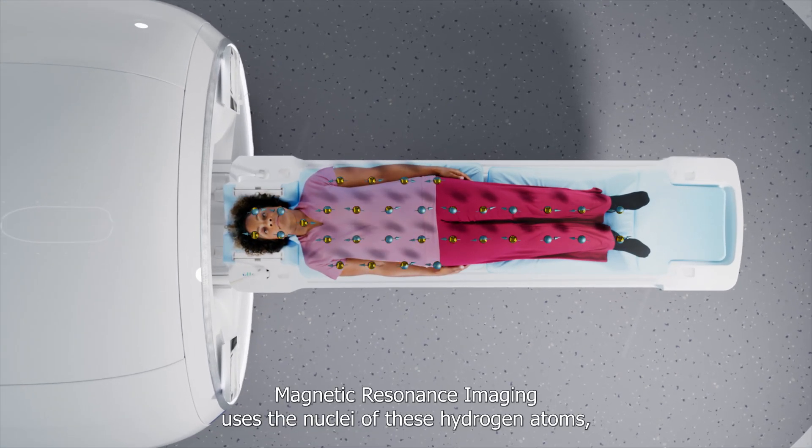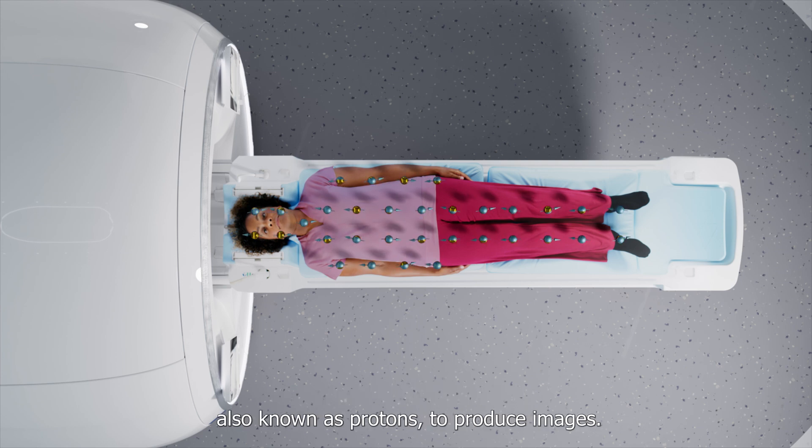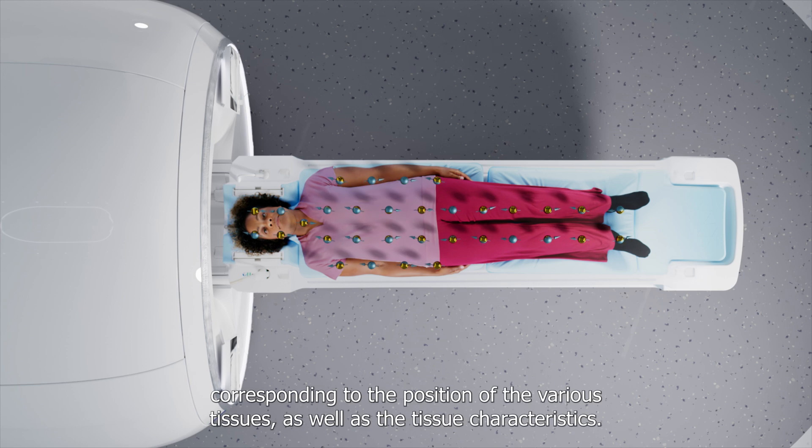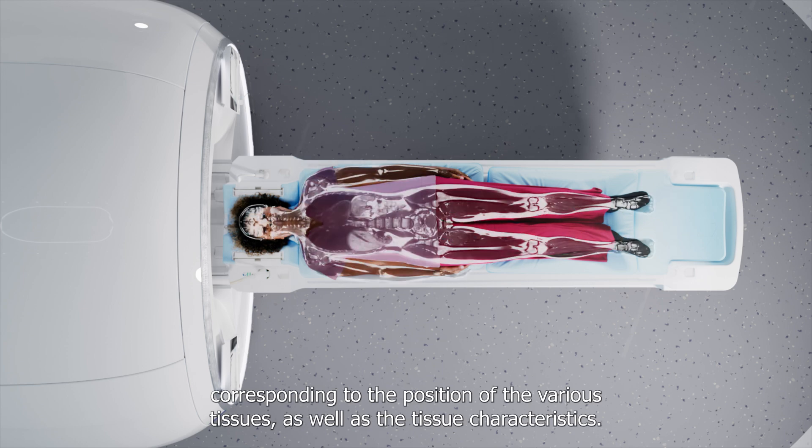Magnetic resonance imaging uses the nuclei of these hydrogen atoms, also known as protons, to produce images. MRI can be used to show the position and concentration of protons in the body, corresponding to the position of various tissues as well as their characteristics.